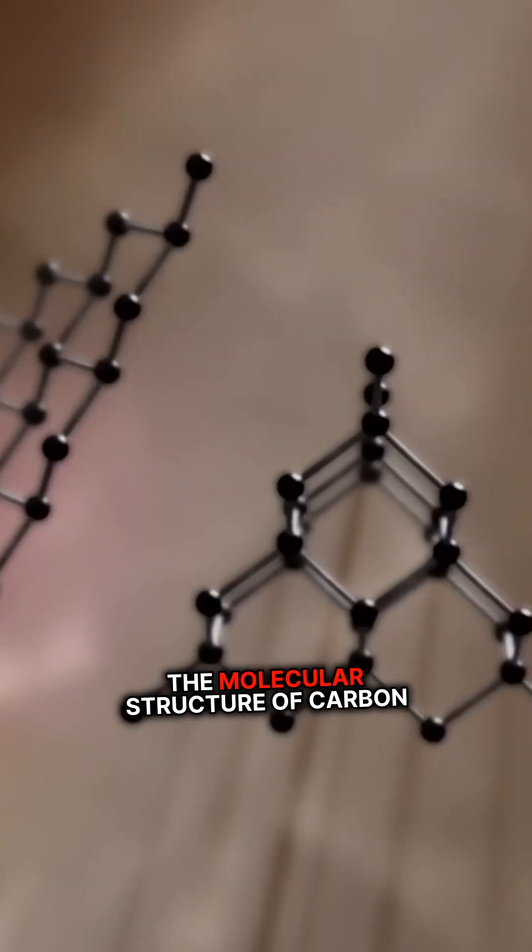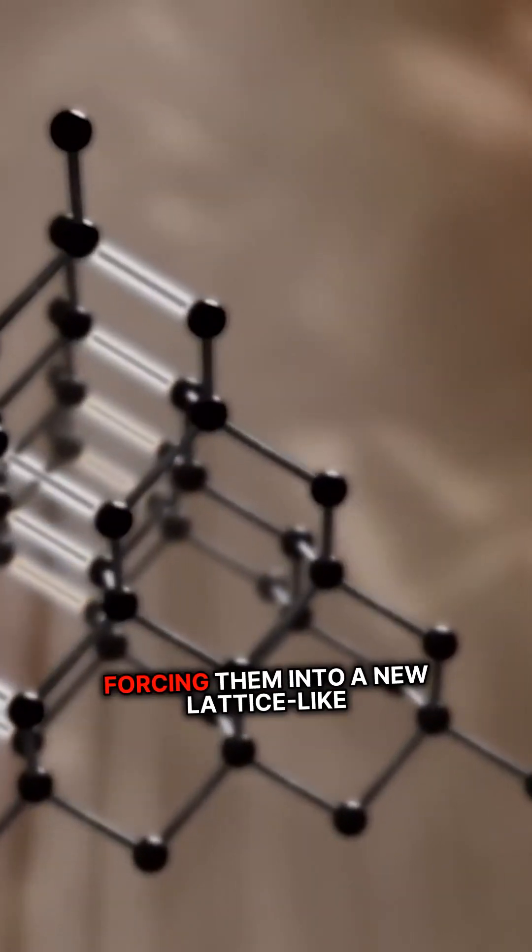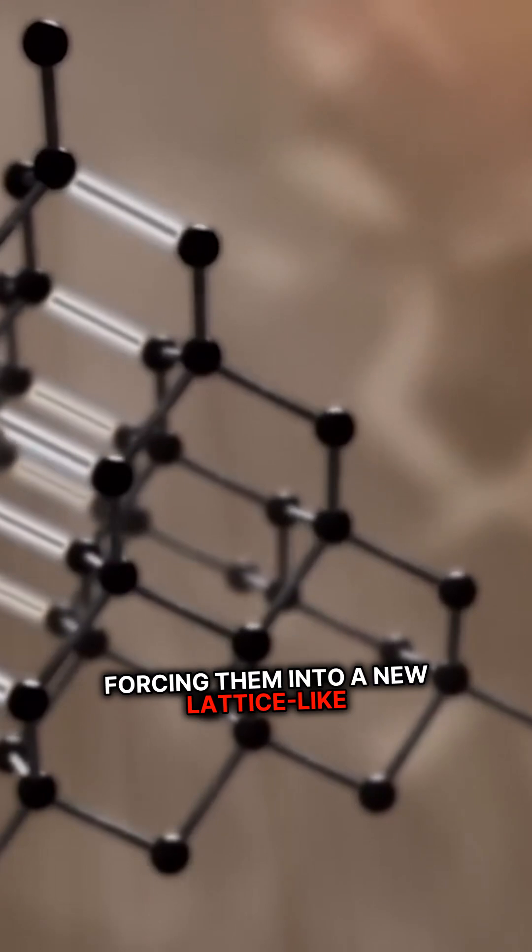Down here, intense pressure changes the molecular structure of carbon by crushing its atoms together and forcing them into a new lattice-like structure.